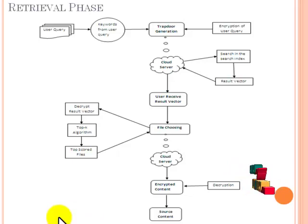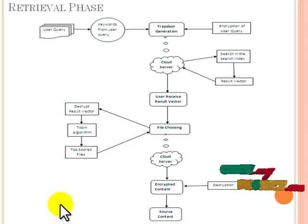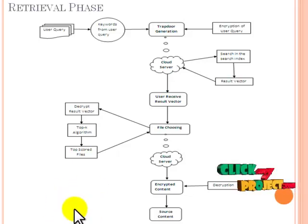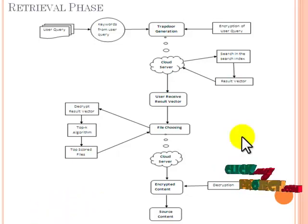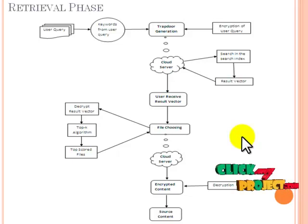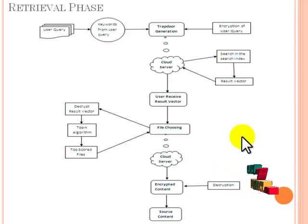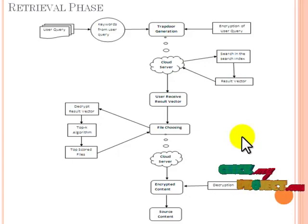The user chooses a top-ranked file to retrieve from the cloud and sends the chosen file ID to the cloud server. The cloud server retrieves the corresponding file and outsources it to the user. The user receives the file and decrypts it with their user keys.